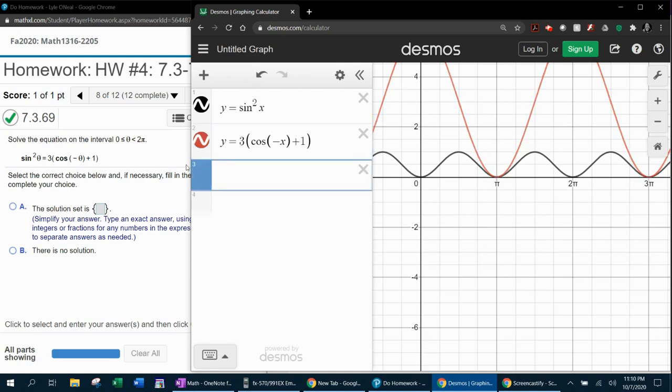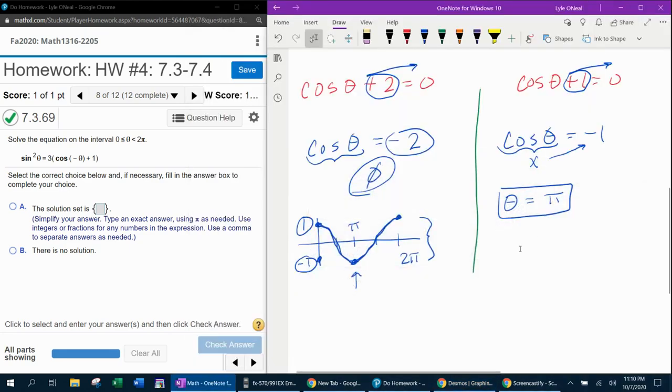And now we're going to grab the right-hand side of this equation. The solution to this equation will be where these two graphs intersect. And we can see that they do intersect at pi. That is the only intersection they have on the interval from zero to two pi. And so that verifies what we did manually.